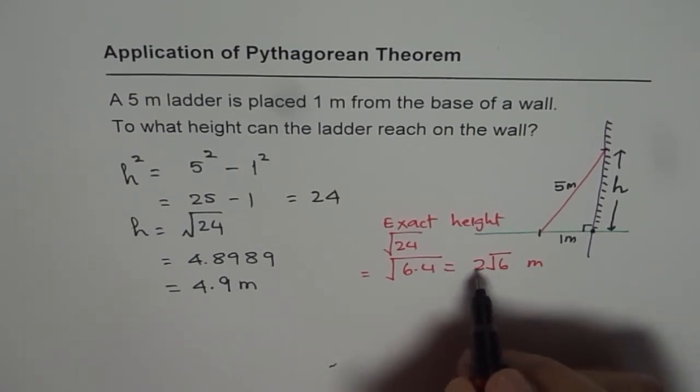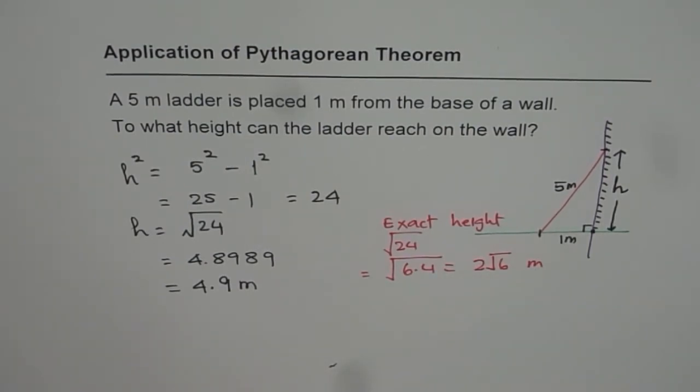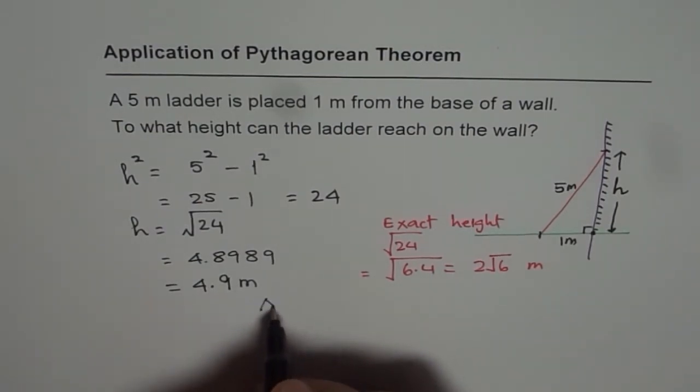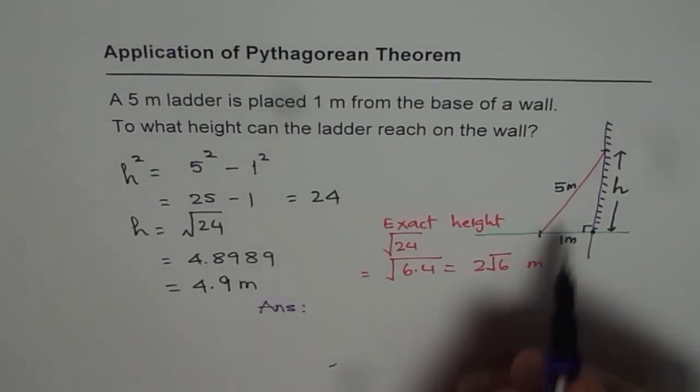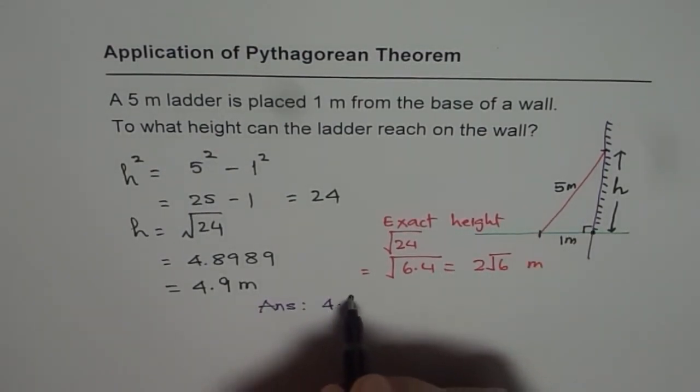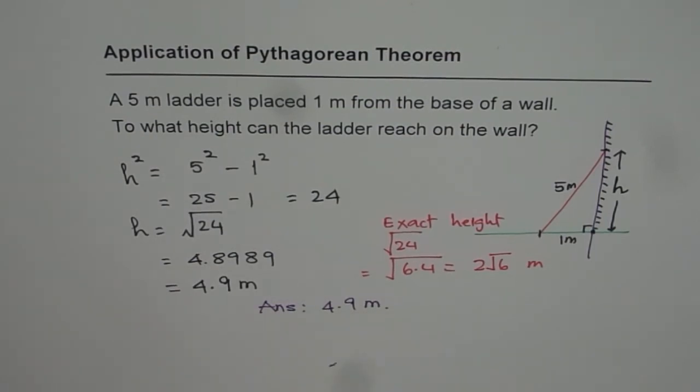So in that case, the exact height will be 2 square root 6 meters. Well, that is not the part at present, but the question answer now is, height, maximum height, ladder can reach is 4.9 meters. I hope you appreciate it. Thank you.